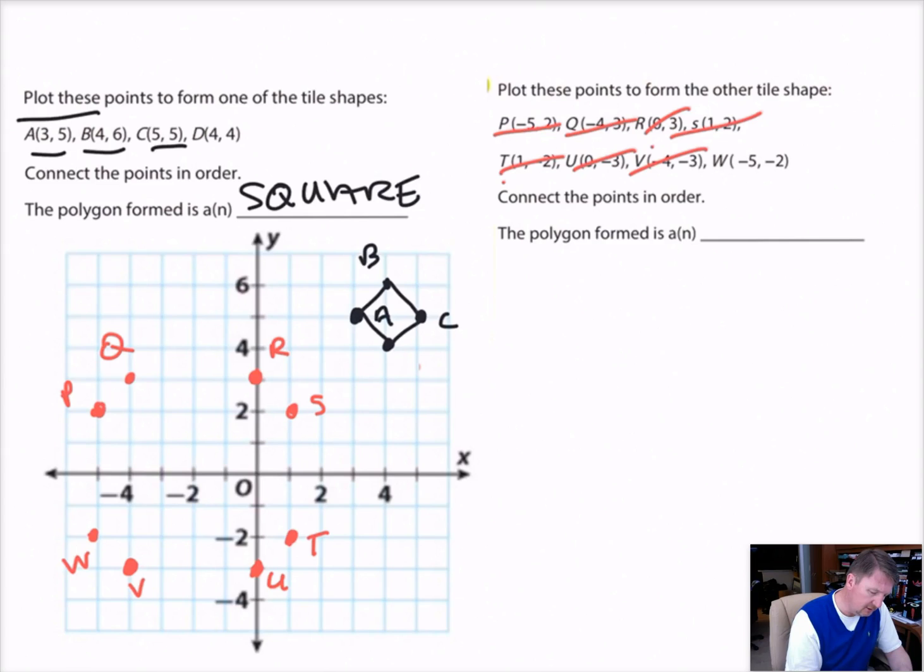Then it says go ahead and connect the points in order. So we started with P, Q, R, S, T, U, V, W, and then back to P. So what shape do we make here? Looks like an octagon to me. Looks like an octagon. Let's move on to the next one.